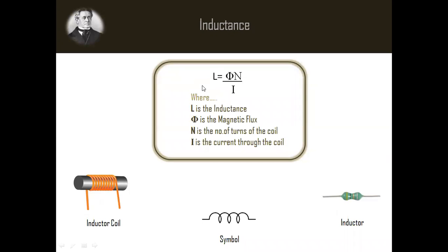Inductance is given by L equals psi N by I, where L is the inductance, psi is the magnetic flux, N is the number of turns of the coil, I is the current flowing through the coil. It is measured in units called Henry.